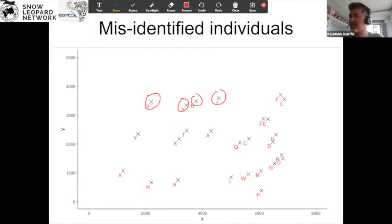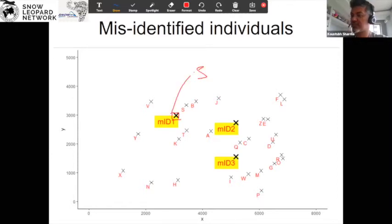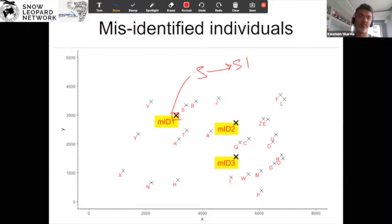What I have done is I have introduced errors in terms of identifying individuals. For example, there was a camera trap here and it encountered snow leopard S, but I forcefully say I don't know that it is S. I'm going to call it a new name — let's say MISID1 or whatever. I think that's a different snow leopard, just because of the patterns or the way the picture was taken — I have misidentified this one animal.